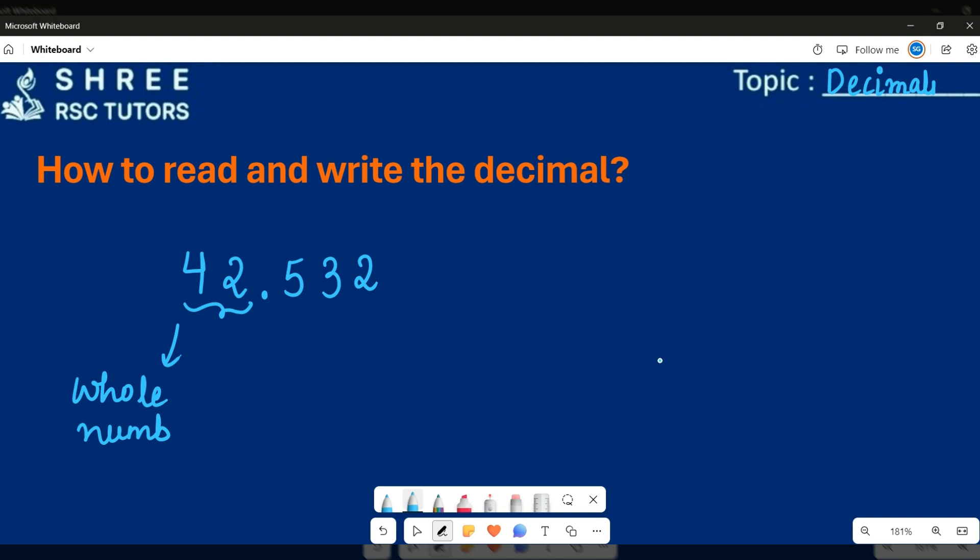Because we know that a decimal point divides a number into a whole number and a fractional part. So because this is a fractional part, that is the reason why we read the digits individually like 532, because it is not a whole number anymore.